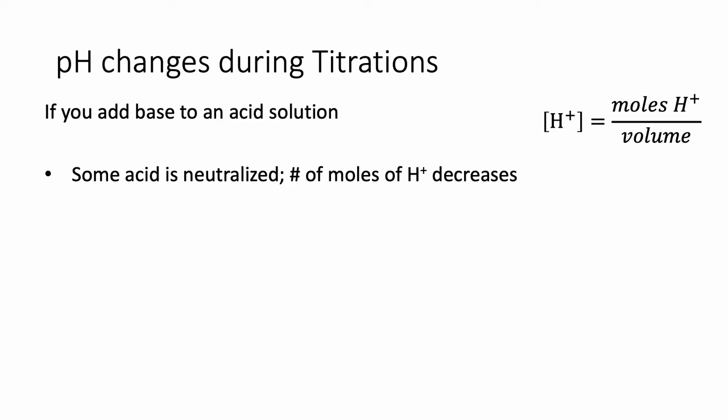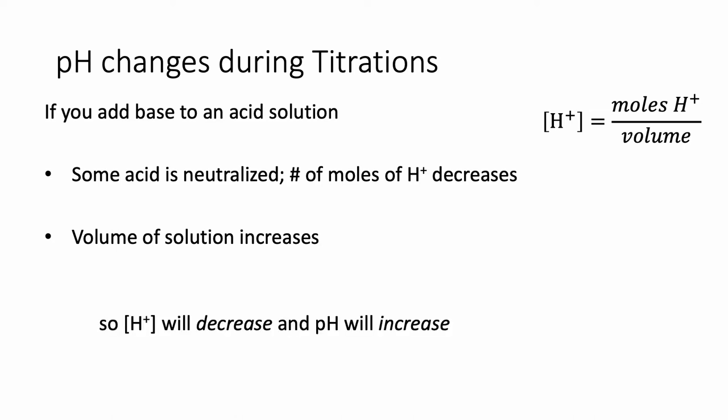The more base you add, the more moles of H+ get neutralized, so over the course of a titration, the number of moles of H+ present will decrease. At the same time, the volume of your solution is increasing — you start with a fixed volume of unknown, let's say 20 or 25 mils, but as you add base, that base is in solution, so the volume in your flask naturally increases. Not only are the moles of H+ decreasing, but the volume is increasing, and since we're dividing by volume, that makes the H+ concentration smaller. Therefore, pH will increase and become more basic as the titration progresses.